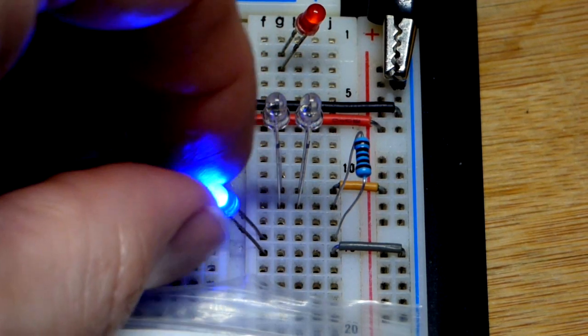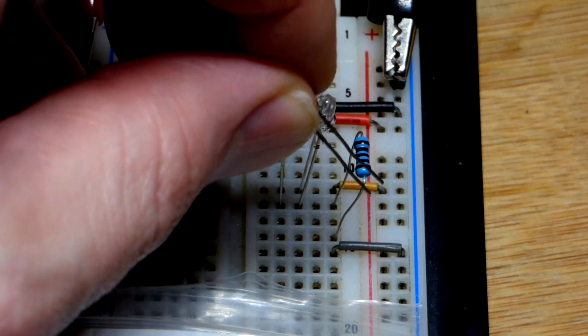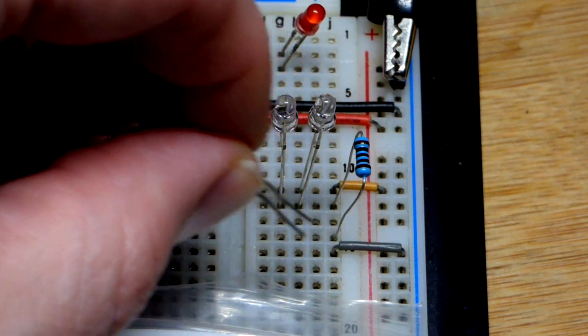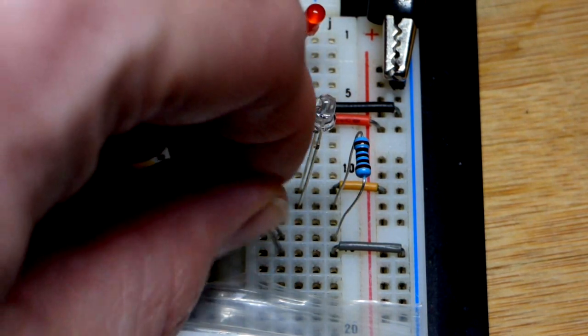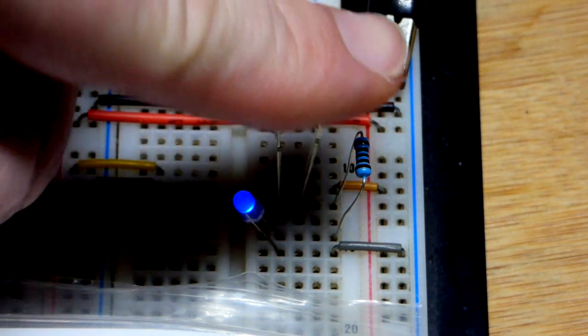So now zooming in we'll take a closer look. We got the LED here of course. It has to be in the proper direction. Long lead the anode more positive, short lead the cathode more negative right there. And we have the two photodiodes right there.